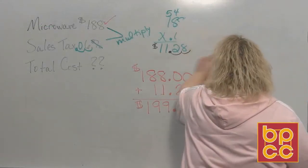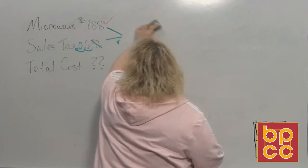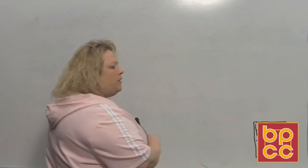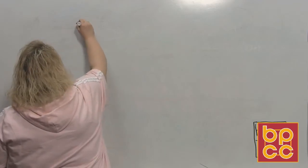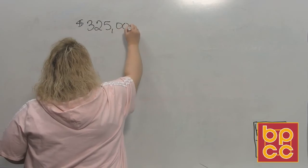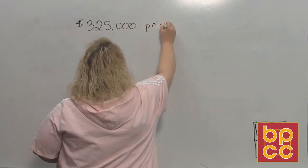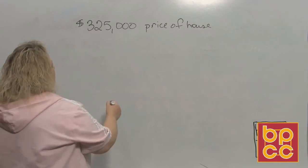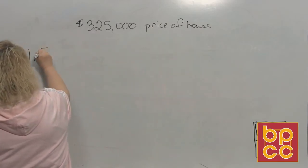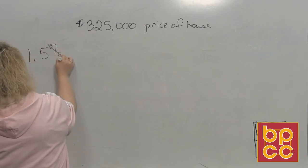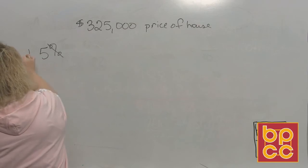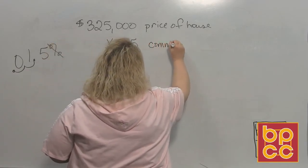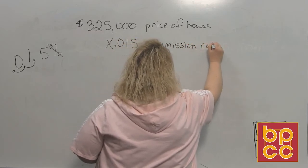So we're going to work one of those problems. So if you are a real estate agent and you're going to sell a house, the amount of the house is $325,000. This is the price of the house. And we're going to multiply that by the sales tax rate. So if it's 1.5%, you get 1.5% commission. That would mean you drop the percent sign, move two places to the left. So what you're multiplying by is 0.015. This is your commission rate.